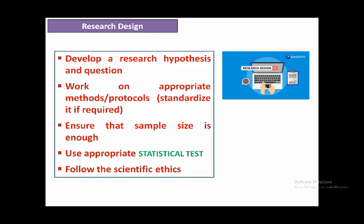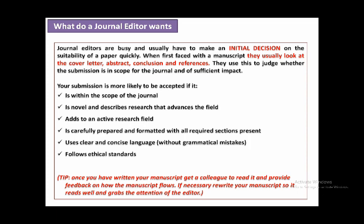We also have to follow certain scientific ethics. A journal editor is generally very busy and usually has to make an initial decision on the acceptance or rejection of your manuscript. When first faced with a manuscript, they usually look at the cover letter, the abstract, the conclusion, and the references to judge whether the submission is within the scope of the journal and of sufficient impact. If the journal focuses on environmental science and you submit a paper on chemical science, it will obviously not be accepted.